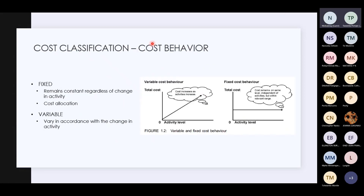Cost behavior: a variable cost goes along with the activity level — how many units of tables are you producing? That will affect the cost of making those tables. The cost increases as the activity increases — that's variable. Fixed cost behavior: it stays constant and is independent of your activity levels. Even if you produce 10,000 tables one month and 5,000 the next, your rental stays the same.